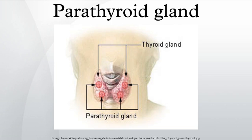Unaware of Owen's description, Sandström described the glands in his monograph on a new gland in man and fellow animals as the glandulae parathyroideae, noting its existence in dogs, cats, rabbits, oxen, horses and humans. For several years, Sandström's description received little attention.